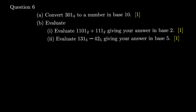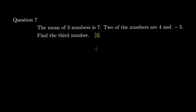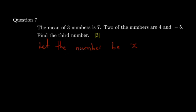That's it for number six. Question seven says: the mean of three numbers is seven; two of the numbers are four and negative five — find the third number. Whenever you're asked to find a number, start with 'let the number be x' — this is called defining the variable. Then treat x as a number you're trying to find.